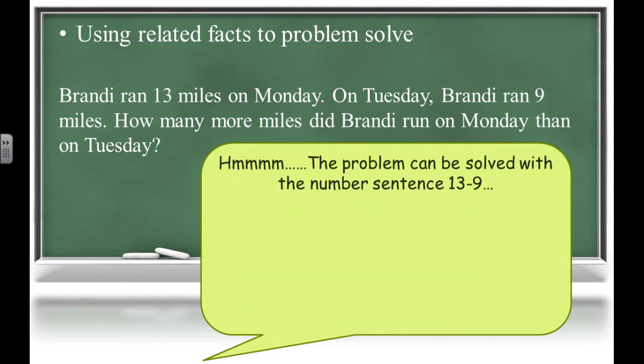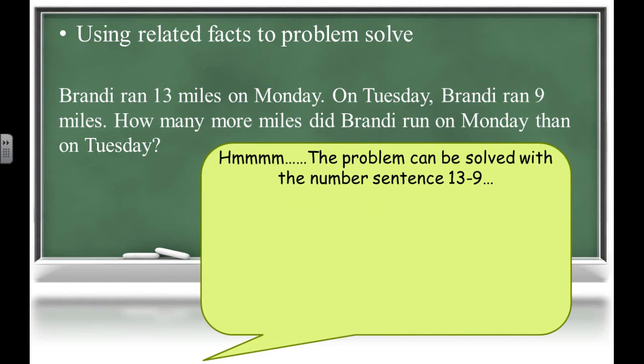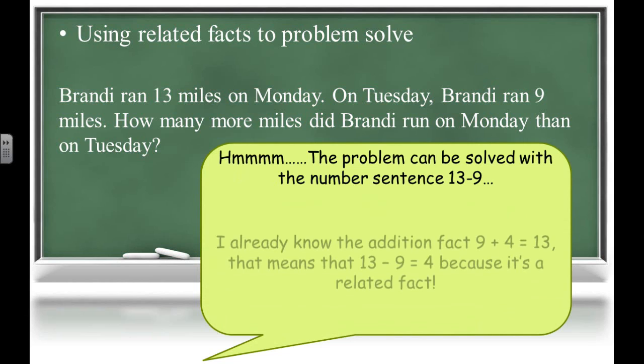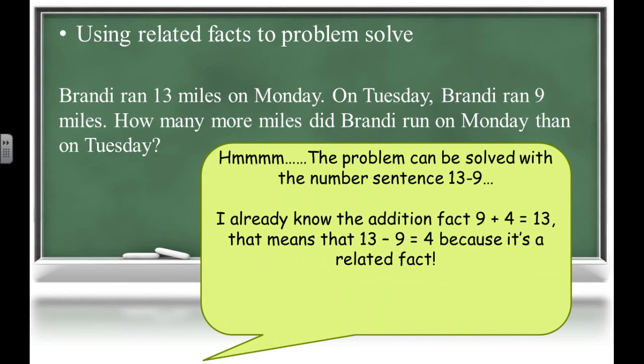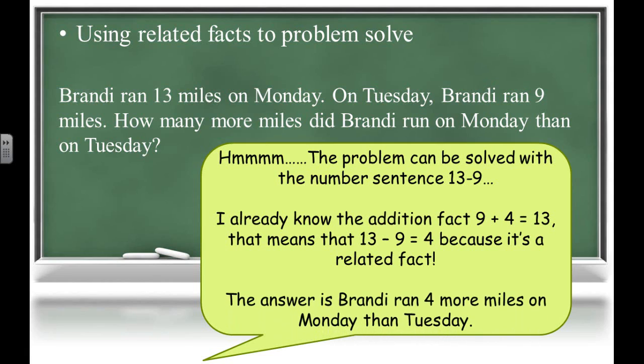A student may think through this problem by saying, hmm, the problem can be solved with the number sentence 13 minus 9. I already know the addition fact 9 plus 4 equals 13. That means that 13 minus 9 must equal 4 because it's a related fact. So the answer is, Brandy ran 4 more miles on Monday than on Tuesday.